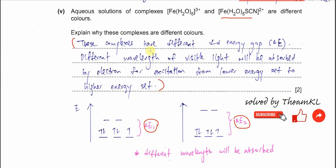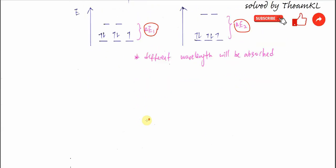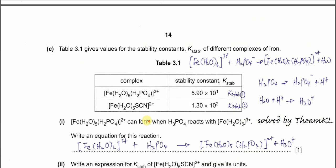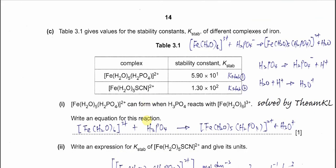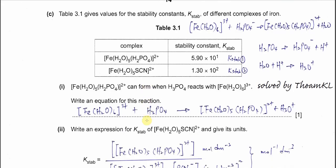The two complexes have different d-d energy gaps (delta E). Different wavelengths of visible light are absorbed by electrons for excitation from the lower energy set to the higher energy set. That is why the two complexes appear as different colours. Part C covers the stability constant (Kstab) for different iron complexes.